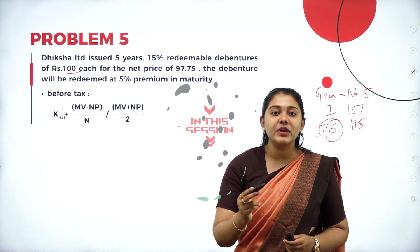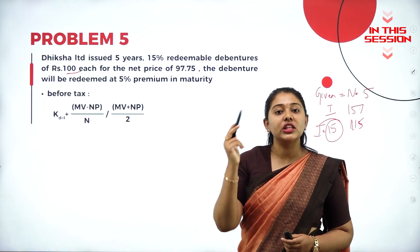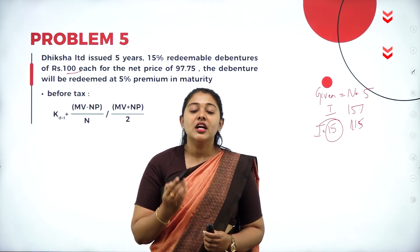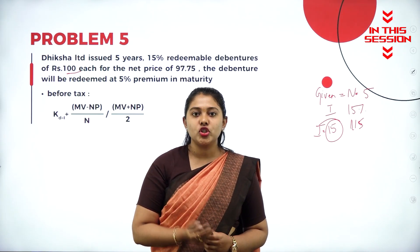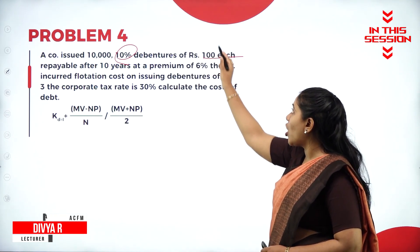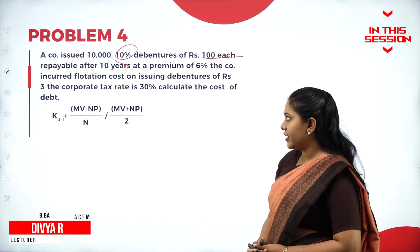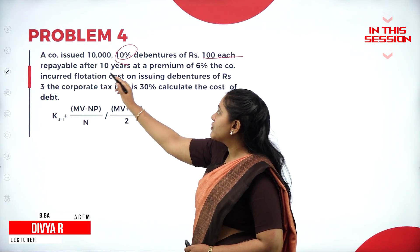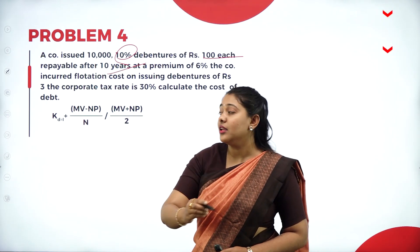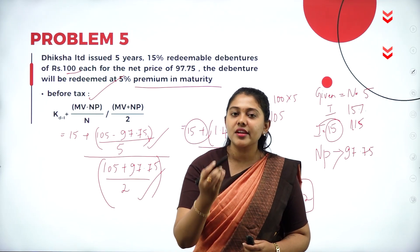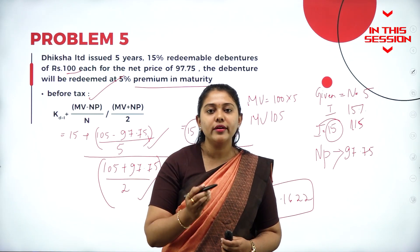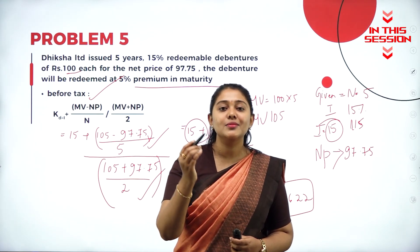So what is the value? 100 rupees is the value. On that 100 rupees, we are supposed to give 15% as interest for the debenture. 10% is the interest on rupees 100 each, repayable after 10 years. When the tax rate is given, it is after tax. When tax rate is not given, then it is before tax.